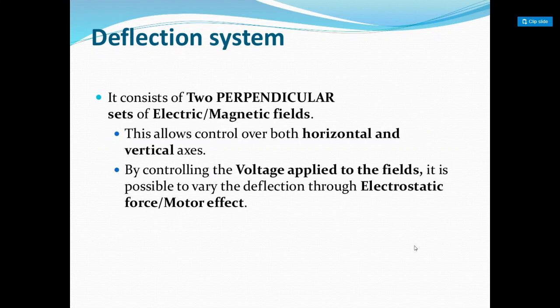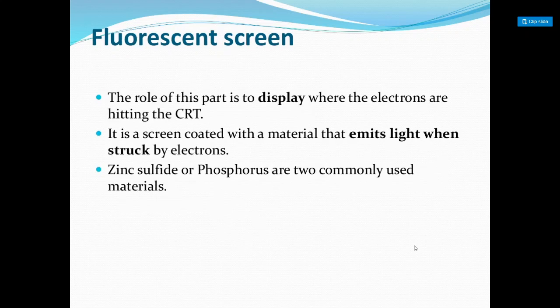Electrostatic force is the electrical force applied to stagnant electrons that are passing. Motor effect means you are trying to move one thing with the help of another. The role of the fluorescent screen is to display where the electrons hit the CRT. It is coated with a material — phosphorus — which emits light when struck by electrons. Zinc sulfide or phosphor are the two most commonly used materials for this.